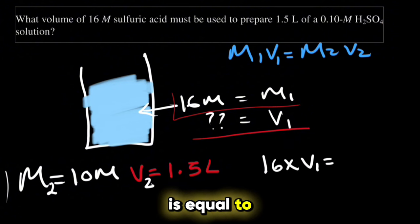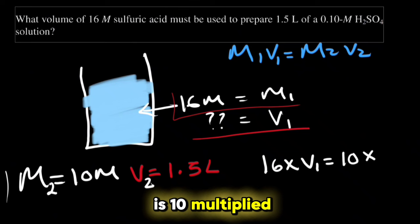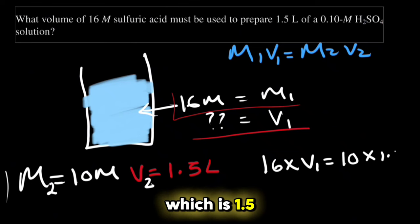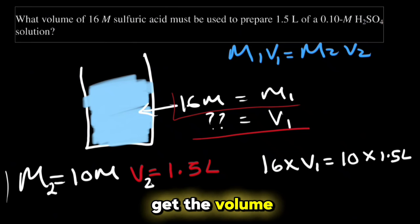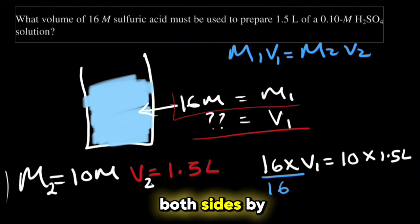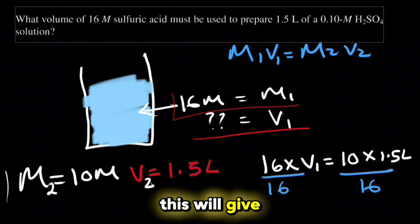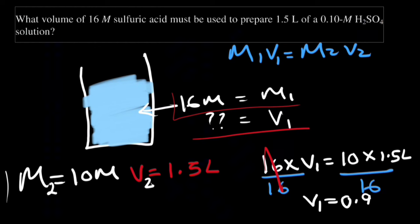Now to get V1, we will divide both sides by 16. This will give us V1 as 0.9375 liters.